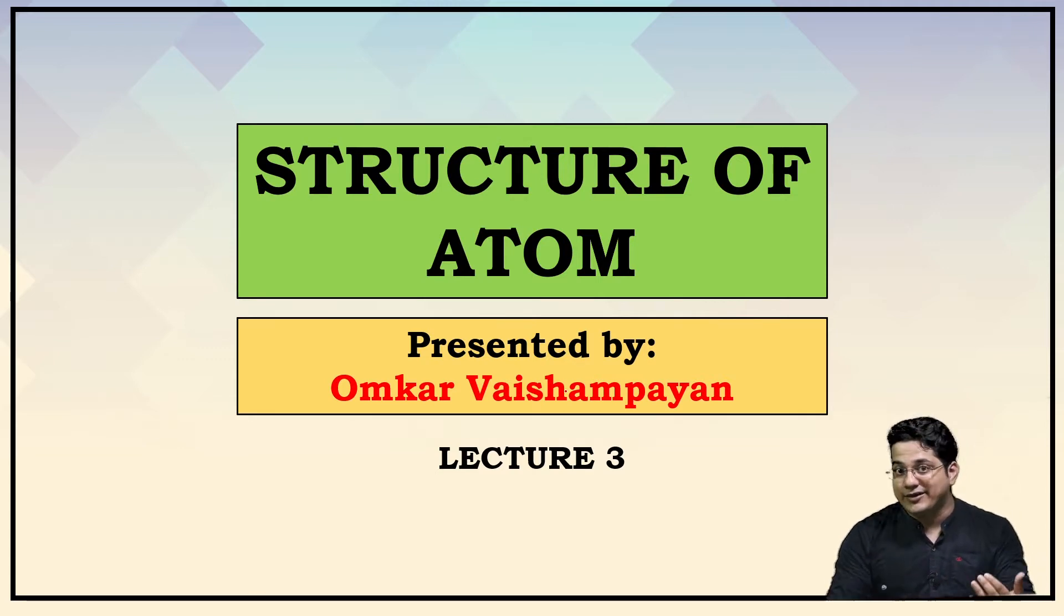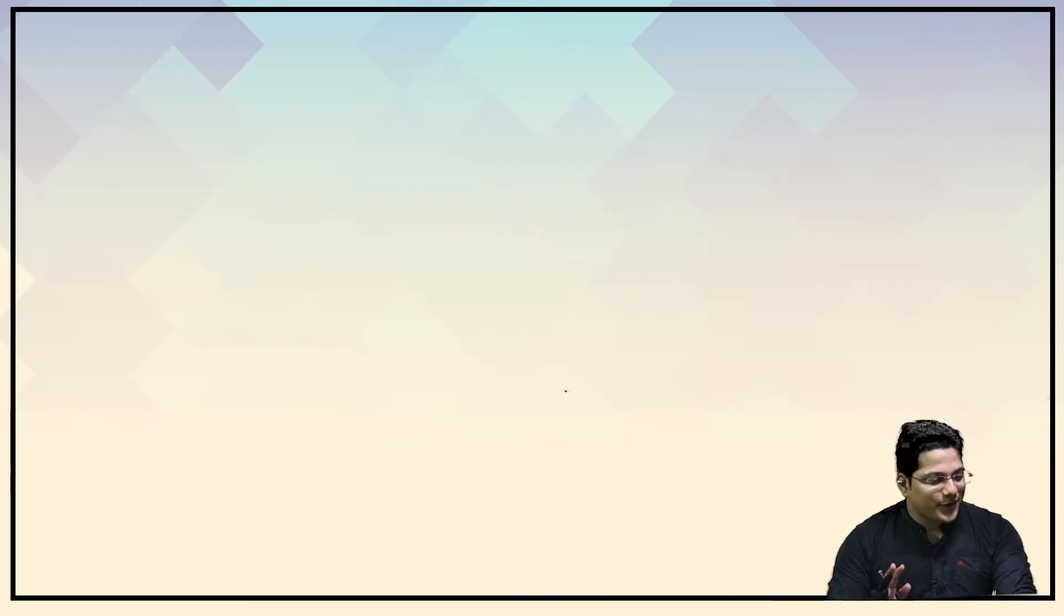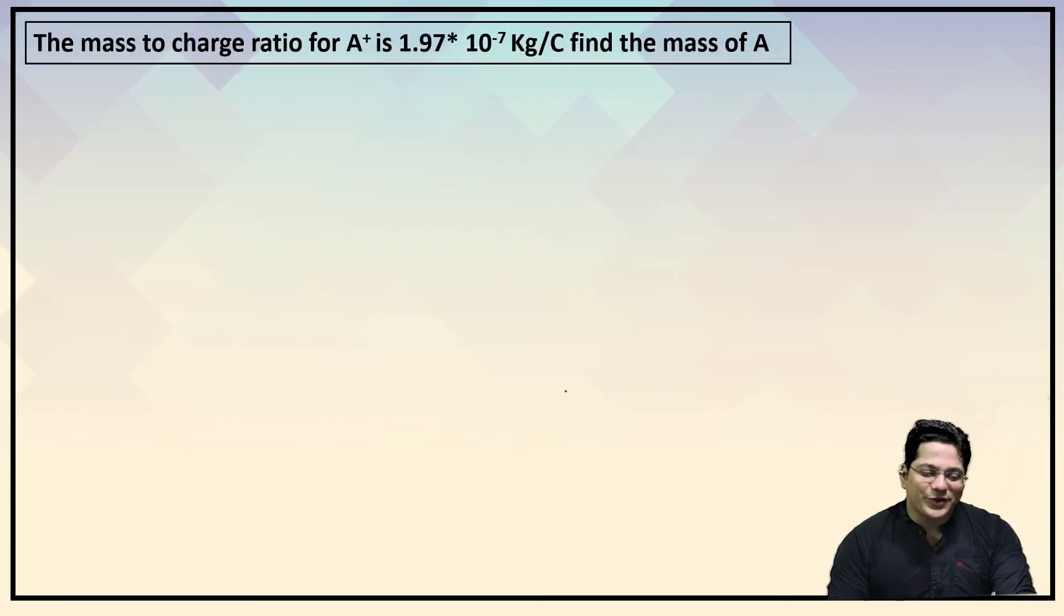That ratio was 1.758 × 10⁸, or 10¹¹ coulombs per kg. We are going to discuss problems related to charge-to-mass ratios. Let's not waste any time and start off with the module.